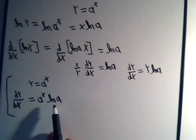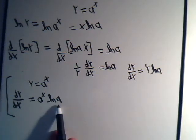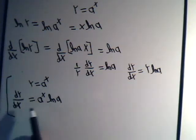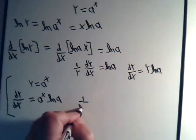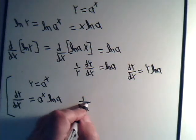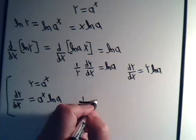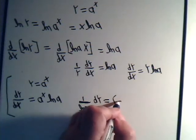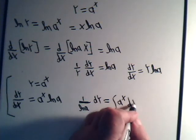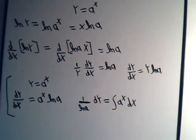So let's see, let's divide both sides of this equation by the natural log of a and multiply by dx. So that will give us 1 over the natural log of a times dy equals a to the x dx.